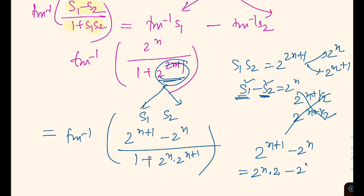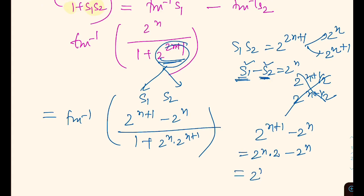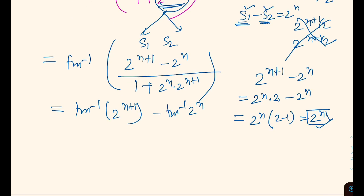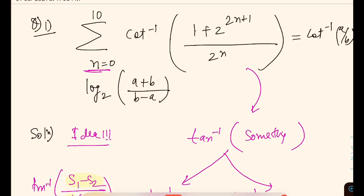It's not difficult to realize that this difference you can write as 2 raised to power N. This can be written as tan inverse 2 raised to power N plus 1 minus tan inverse 2 raised to power N. So we are almost done.